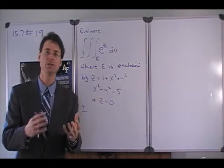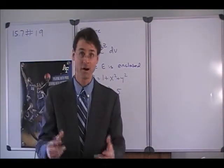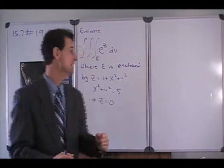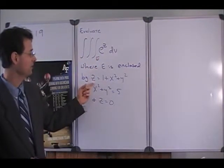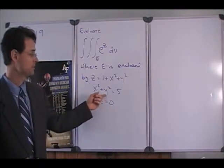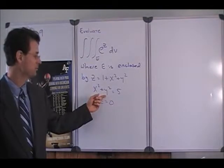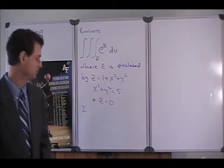So this E, don't get all bent around the axle with that. The E is just the region of space, the volume of three-dimensional space, enclosed by the paraboloid z equals one plus x squared plus y squared, the circular cylinder x squared plus y squared equals five, and the xy plane.